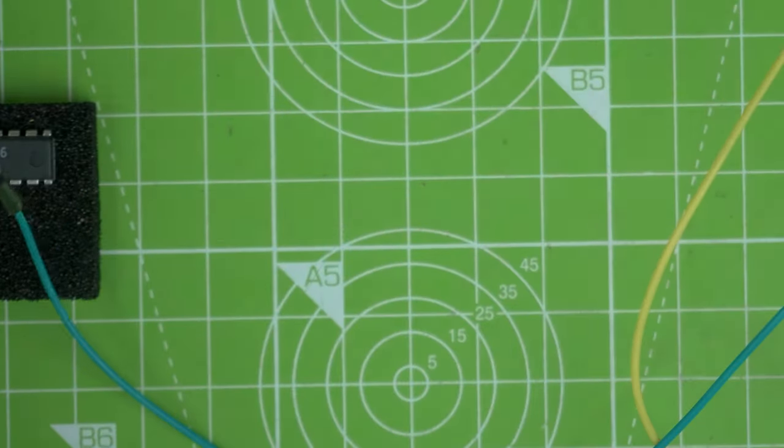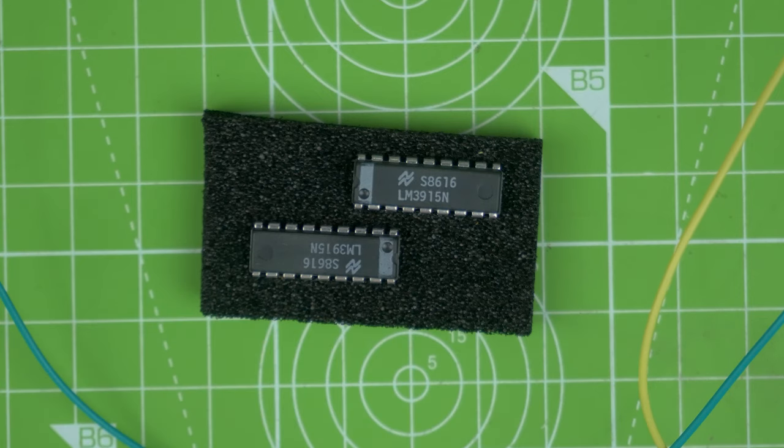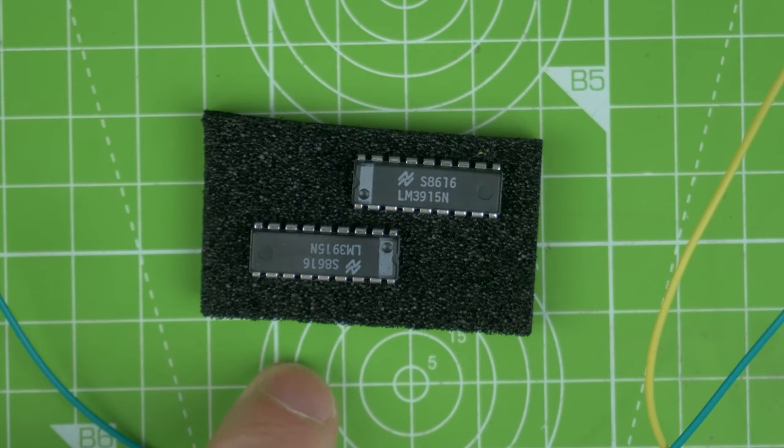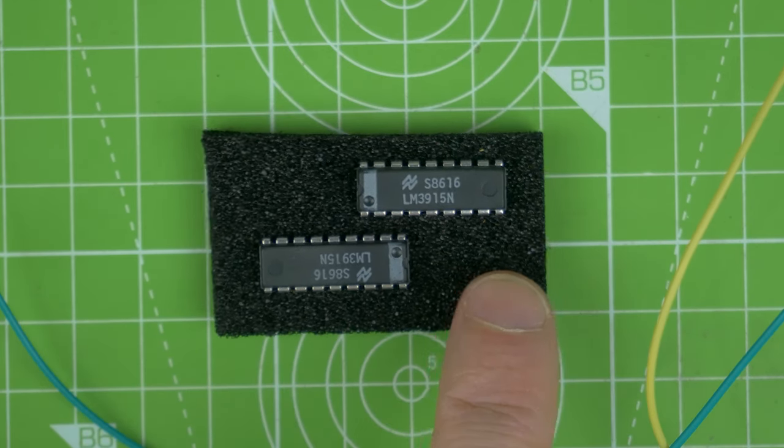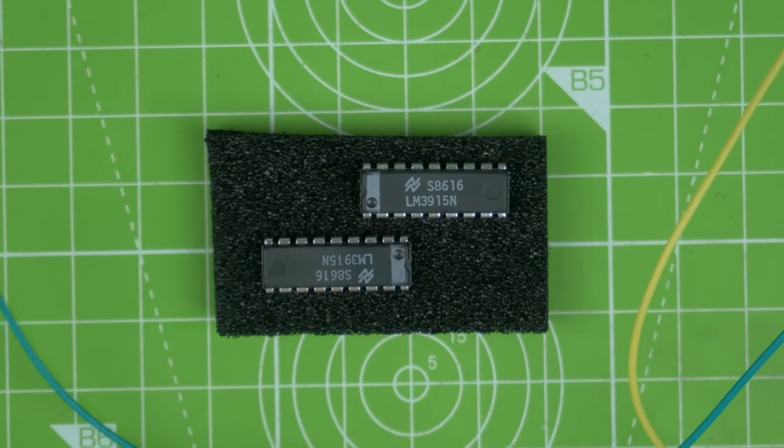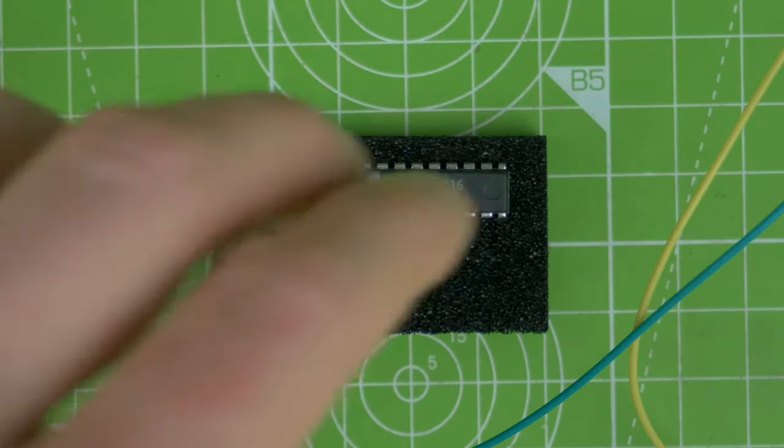I put a video up about this and somebody pointed out that there was an LM3915 which has a logarithmic response, I believe that's correct, which is apparently more appropriate for audio applications. So I thought I'd go online and find some. Interestingly, the LM3914 data sheet doesn't mention any other versions. There's also an LM3916 as well. So I'll be trying that one out and seeing what kind of difference it makes.